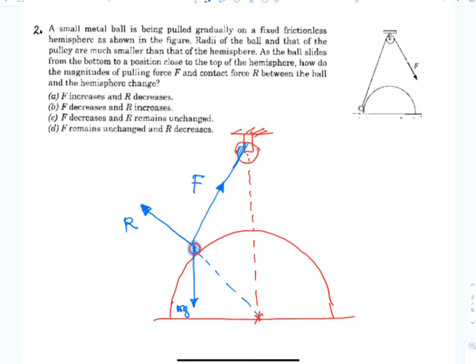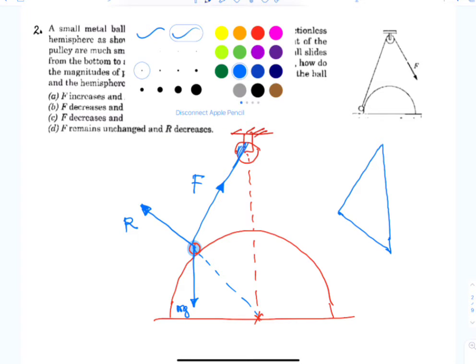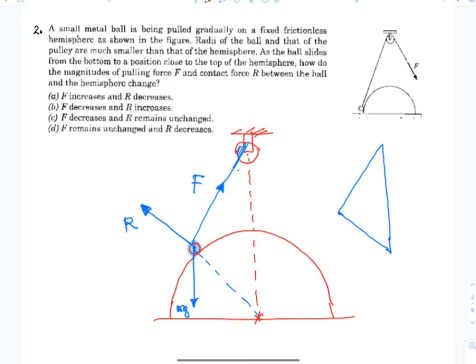So we will draw a vector triangle. I'll just mark these angles. Say this angle is theta 1, theta 2, and theta 3.